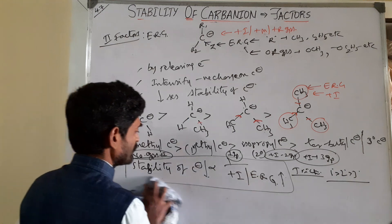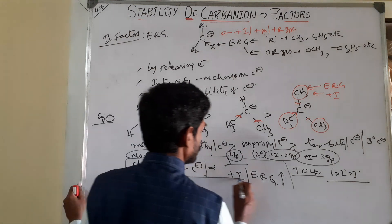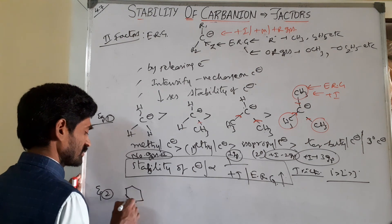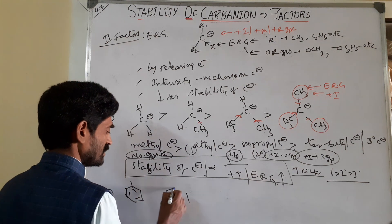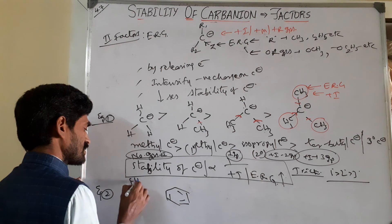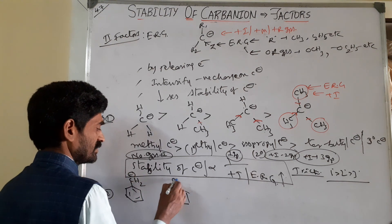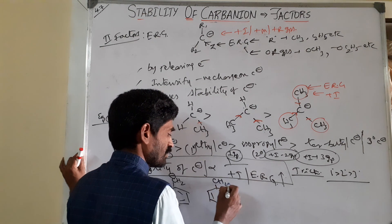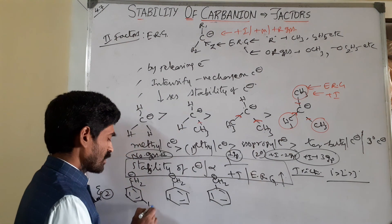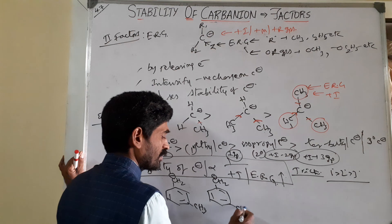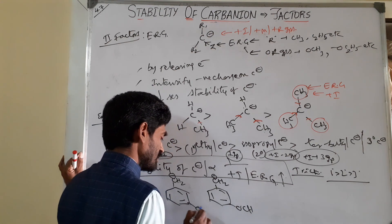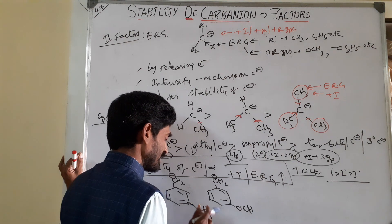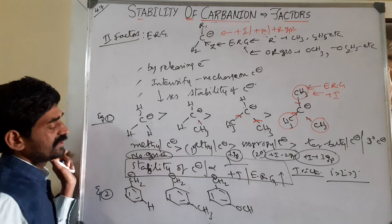We'll do one more example with the effect of resonance. For example, in example two, we have a CH2 minus carbanion. In one case it is carrying a hydrogen, in another a methyl group, and in another a methoxy group. Now which is more stable here?